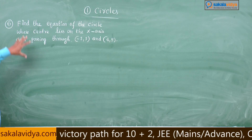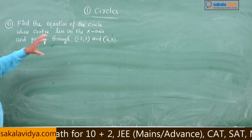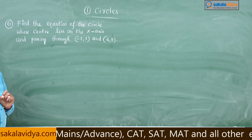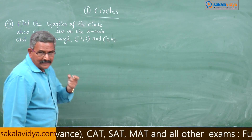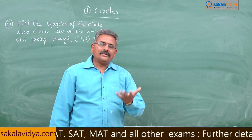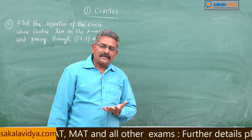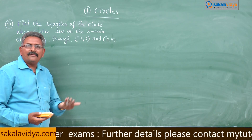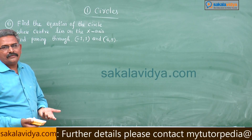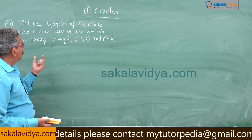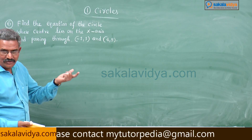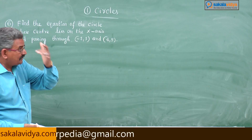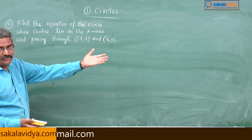So that means we have to find the equation of the circle whose center lies on the x-axis. On the x-axis, the y-coordinate is equal to 0, that is why the center of the circle may be in the form of minus g comma 0. If minus g comma minus f is the center, since it lies on the x-axis, f becomes 0.